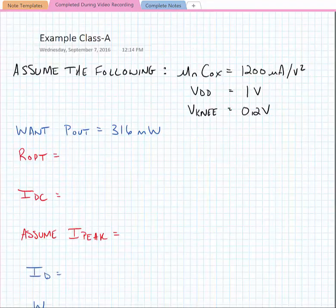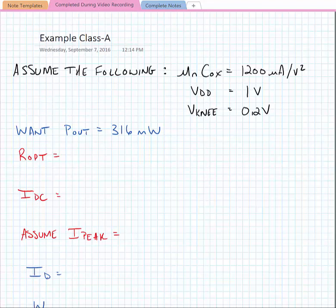Let's assume that we're given a process that has the mu-N-C-Ox product of the transistor equal to 1200 microamps per volt squared, a supply voltage VDD of 1 volt, and a knee voltage of 0.2 volts. We want to achieve an output power of 316 milliwatts or 25 dBm.